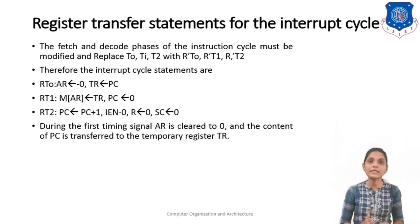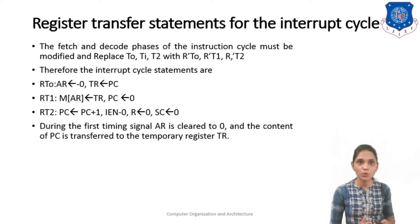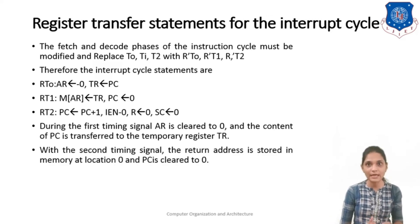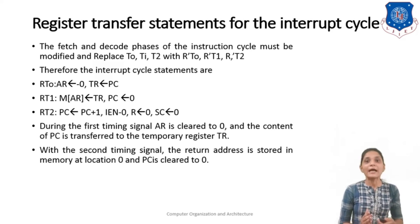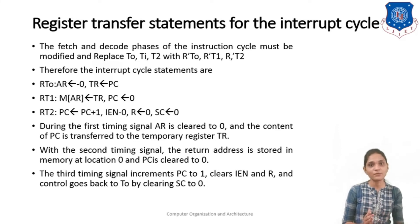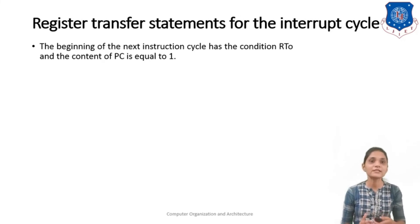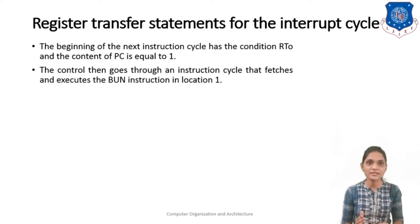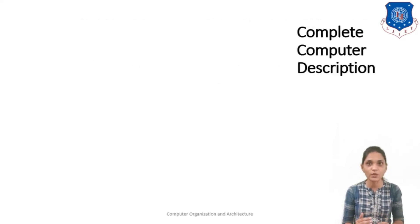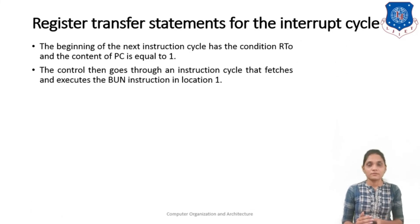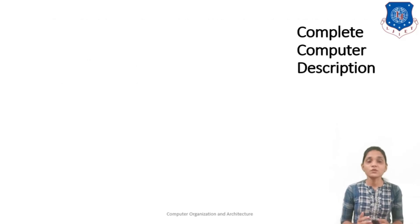Lastly you put the sequence counter to 0 so that you can execute the next instruction. So these are the basic tasks required while executing the interrupt cycle. During the first timing signal AR is set to 0 and the content of the program counter is transferred to the temporary register TR. With the second timing signal the return address is stored into memory location 0, PC is cleared to 0. In the third timing signal we increment PC by 1, clear IEN and R, and control goes back to clearing the sequence counter to 0. The beginning of the next instruction cycle has condition RT0, the content of PC equals 1, and control goes through the instruction cycle, fetches and executes the BUN instruction at location 1.